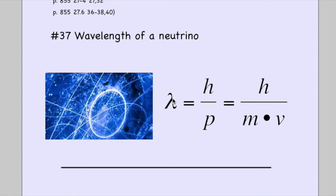Problem 37 asks for the wavelength of a neutrino. A neutrino is a really tiny particle with a great history of how it was discovered. This is a more appropriate use of the equation.